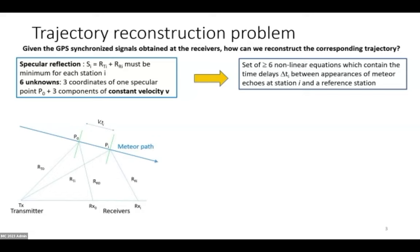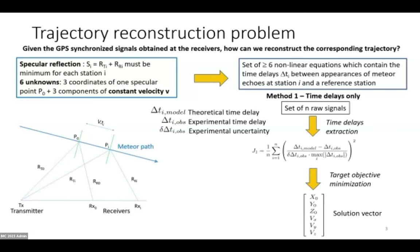Our only inputs, as Hervé already mentioned, are our time delays. We extract them through some processing of our radio signals and plug them inside this function here, which is then minimized by a certain solver. The solver outputs the solution vector, which is basically our trajectory.